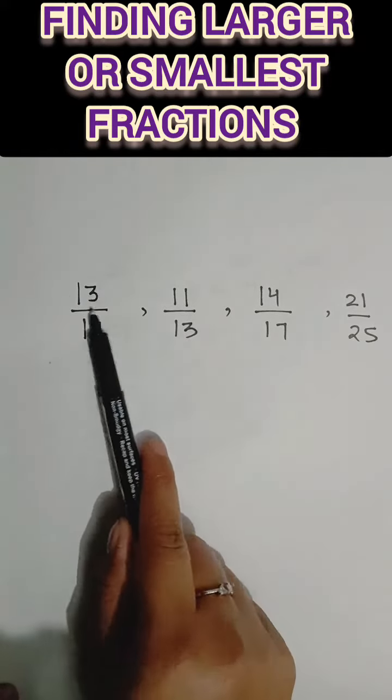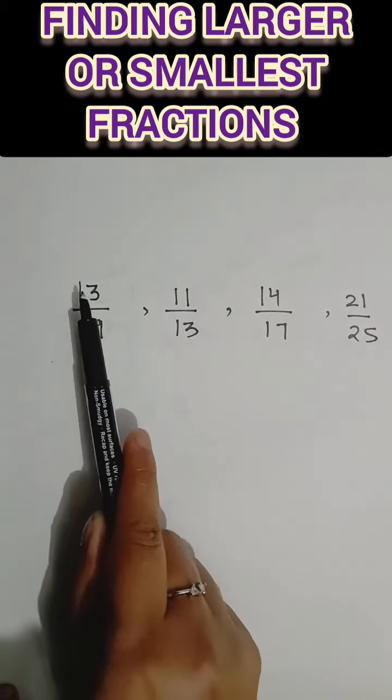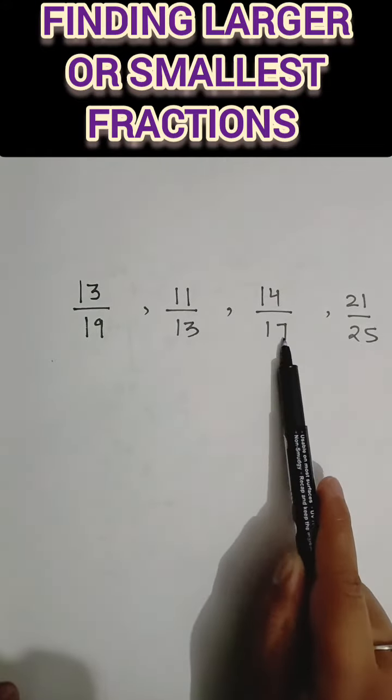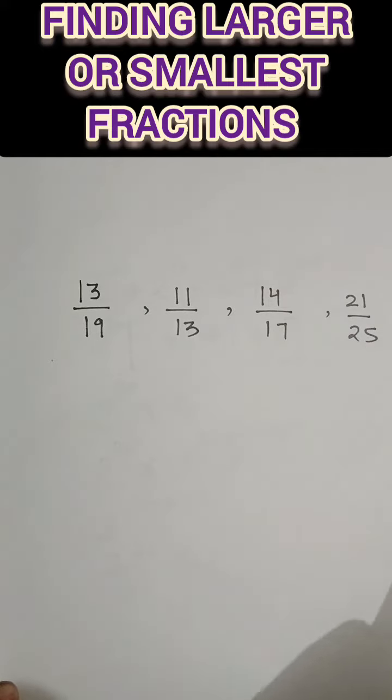Proper fractions are small, the numerator is small, the denominator is big. So, 13 is less than 19, this is proper. 11 is small, this is also proper fraction. 14 is less than 17 and 21 is less than 25.